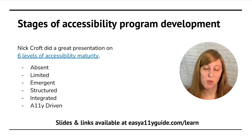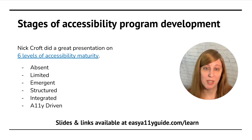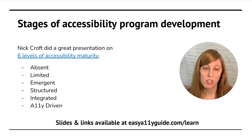The first level is absent — that means accessibility just isn't part of your agency yet, and that's where basically everyone starts. Then we progress through different phases: limited, emergent, structured, integrated, and finally accessibility driven.